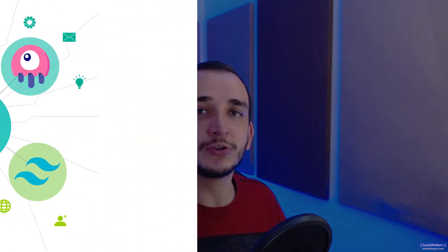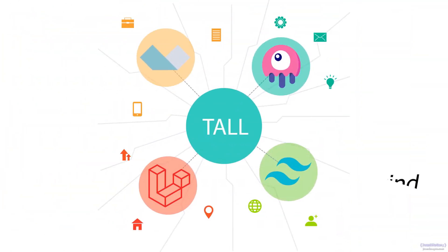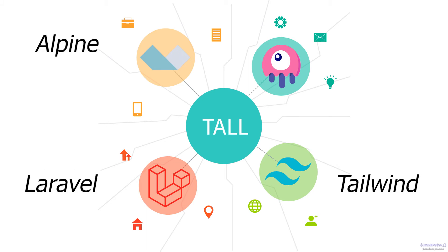The TALL stack uses Tailwind for CSS and styles, Alpine for dynamic JavaScript, and Laravel with Livewire to get the backend working dynamically and almost in real time, to get all your applications working immediately.